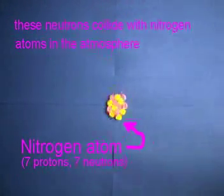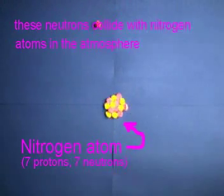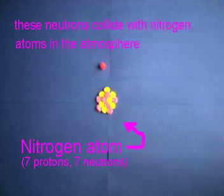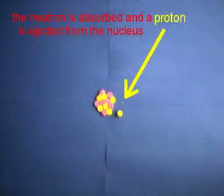These high-speed neutrons then collide with nitrogen atoms in our atmosphere, causing a proton to be ejected from the nitrogen atom's nucleus.